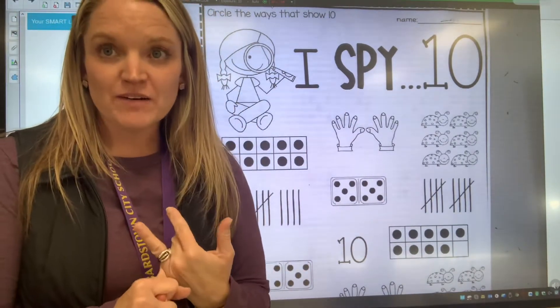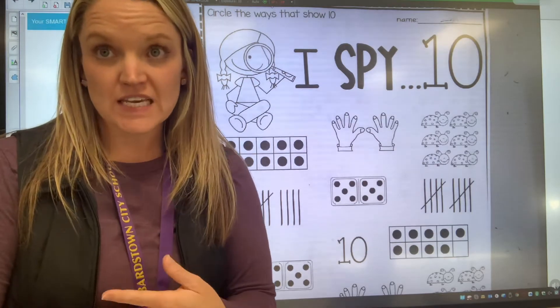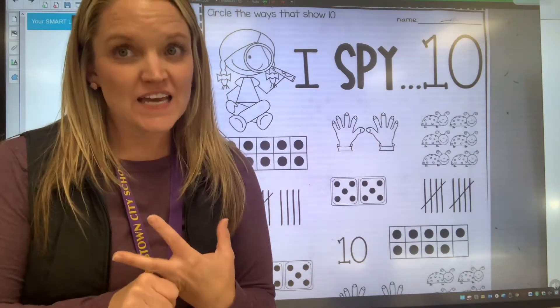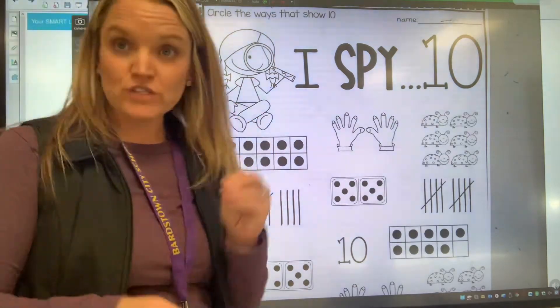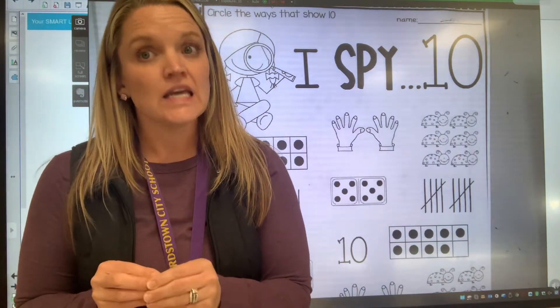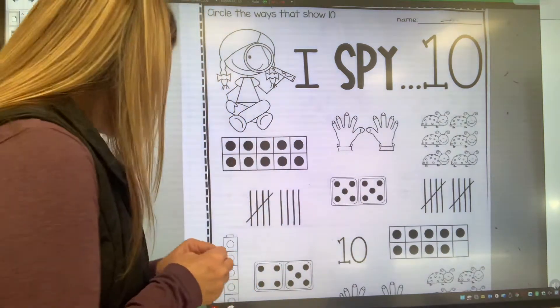You're counting each item or looking at the word to see if it says the word 10. T-E-N 10 and you're either circling it if it shows 10, put an X on it if it does not show 10.